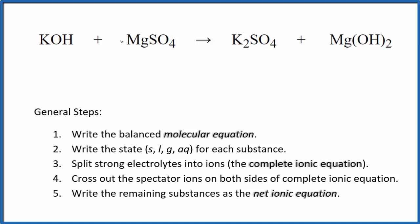I can see that I have one potassium here and two here. So I'm going to put a two in front of the KOH. Two potassium atoms, two potassium atoms. We have two hydroxides here, we have two hydroxide, magnesium, magnesium, sulfate and sulfate. So this is the balanced molecular equation.